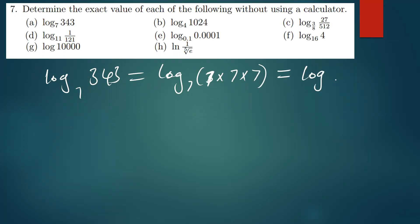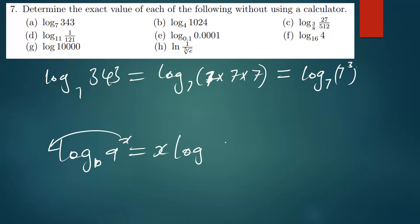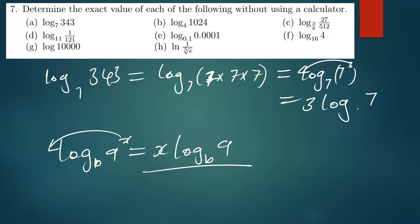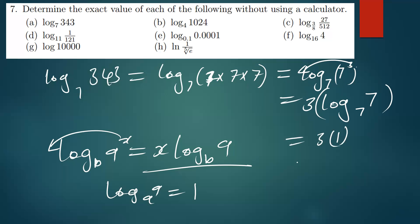This can be written as the log of 7 to the power 3, base 7, because we have three sevens. Remember the rule: when you have log of a to the power x, base b, the x can drop down, giving you x·log(a) base b. So the 3 drops down, giving us 3 · log(7) base 7. Since log(7) base 7 equals 1, we get 3 times 1, which equals 3.